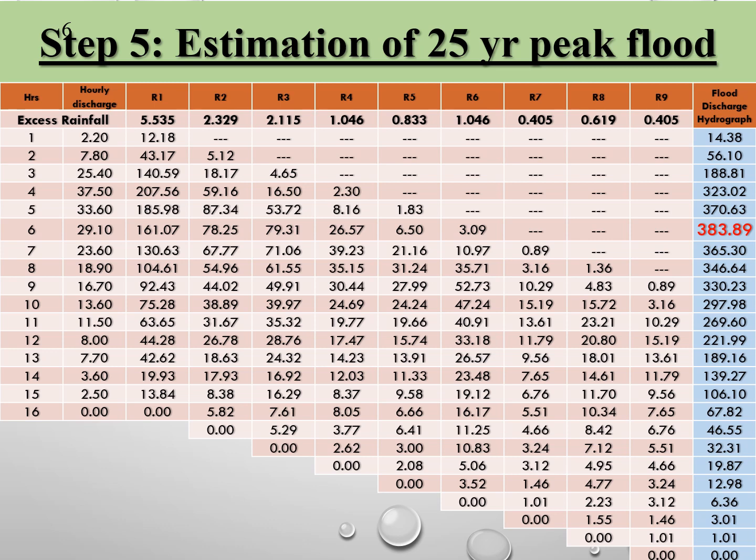In the last column, the flood discharge hydrograph is obtained by summing the R values. For example, in the first hour: 2.2 plus 12.18 gives 14.38, and so on up to 0. The maximum value obtained is 383.89, which is the peak flood hydrograph value.